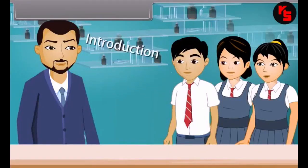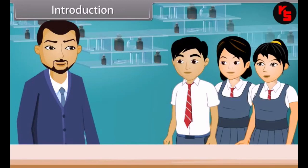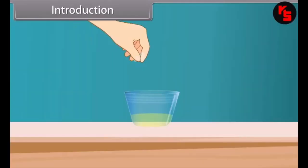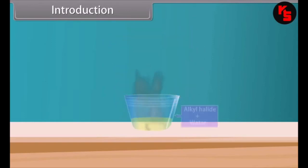Good morning, teacher. Good morning, students. Today we will learn about chemical reactions of alcohols, phenols and ethers. Sir, what is a chemical reaction? A chemical change is a process where one or more substances are altered into one or more new and different substances. When we drop bromine in alcohol, a chemical reaction occurs and it forms alkyl halide and water. In this lesson, we will learn more about chemical reactions of alcohols, phenols and ethers.